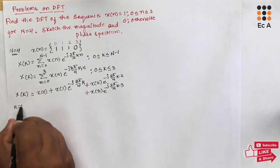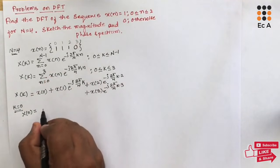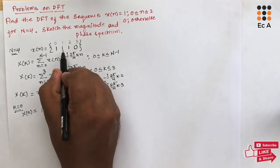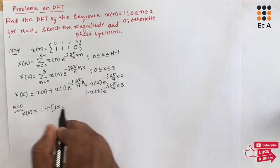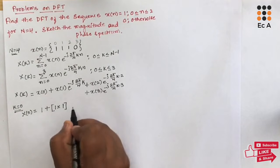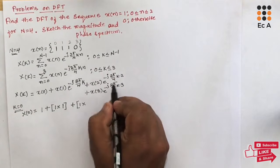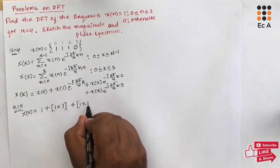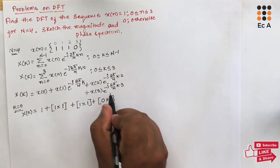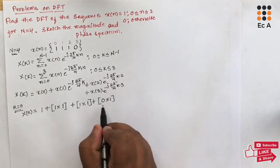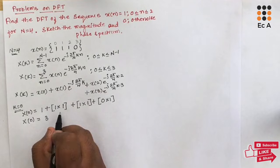First, let us put k = 0. X[0] = x[0] * 1 + x[1] * 1 + x[2] * 1 + x[3] * 1. Since x[0] = 1, x[1] = 1, x[2] = 1, and x[3] = 0, we get X[0] = 1 + 1 + 1 + 0 = 3.